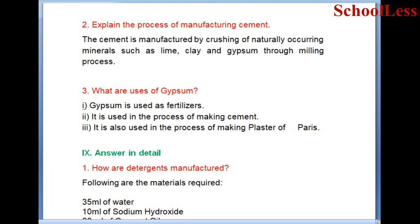Explain the process of manufacturing cement. Cement is manufactured by crushing naturally occurring minerals such as lime, clay, and gypsum through a milling process. What are the uses of gypsum? Gypsum is used as a fertilizer, in making cement, and in making plaster of Paris.